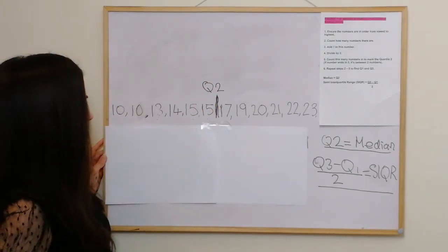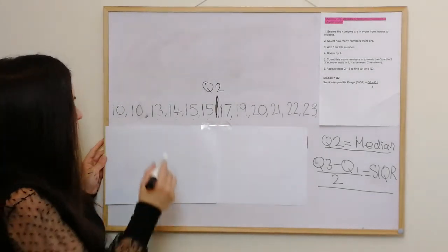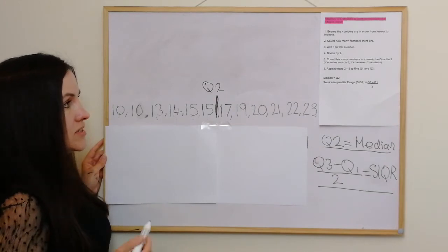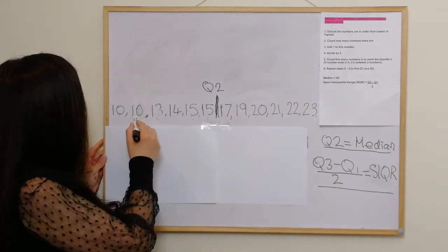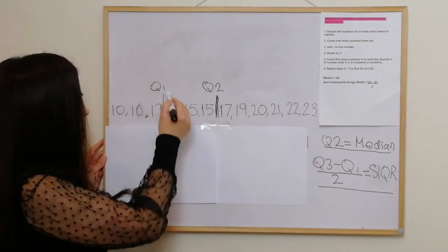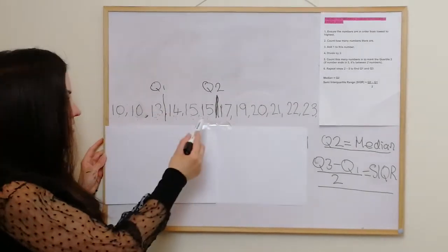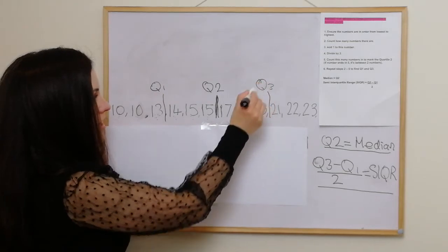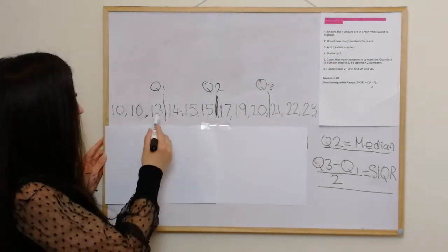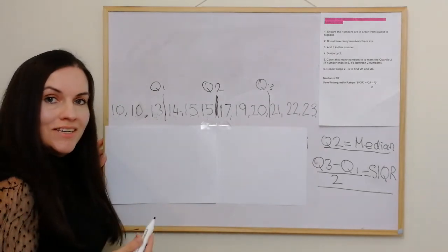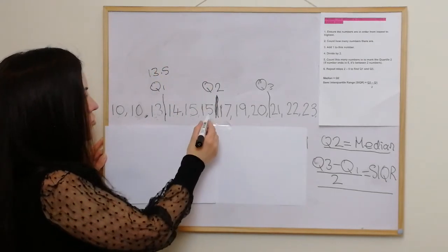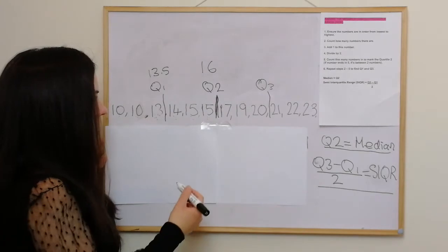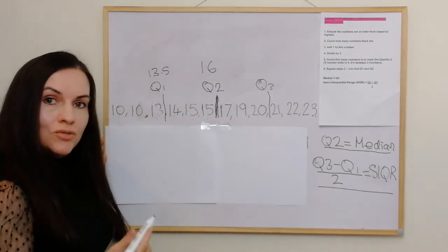Then we do the same with the first half. We count 6 numbers, add 1 to get 7, divide by 2 gives 3.5. Count 1, 2, 3 — and Q1 is in here between those numbers. The same applies for Q3 on the other side. Q1 lies halfway between 13 and 14, which is 13.5. Q2 is halfway between 15 and 17, which is 16. Q3 is between 20 and 21, which is 20.5.